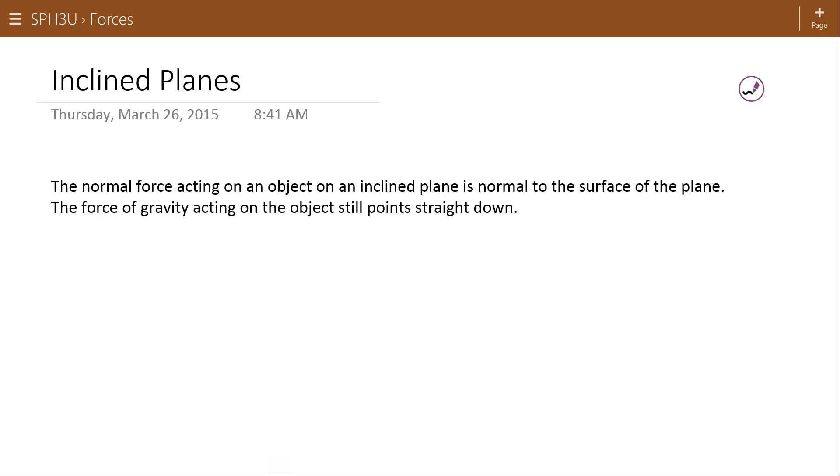The trick with an inclined plane, something on an angle like this, is that if we have an object, I'm going to make it a ball because I want to imagine it rolling down the surface. And I recognize the forces acting on this object. The force of gravity is going to pull straight down. And the normal force acting on the object is going to stay normal to the surface, like that.